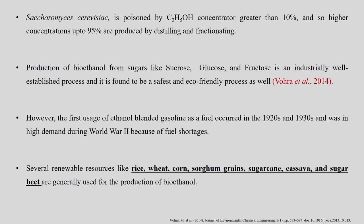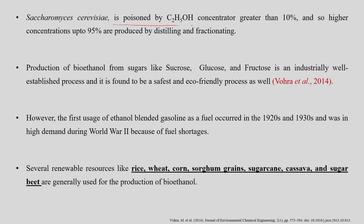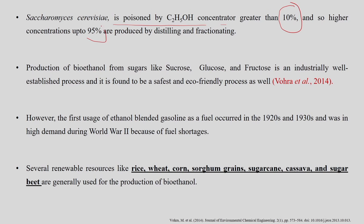Advancements are happening to convert material into ethanol more quickly, but our main focus in this course remains on the biochemical pathway. Saccharomyces cerevisiae, the widely used microbial strain, is poisoned by ethanol concentrations greater than around 10 percent. Higher concentrations of 95 percent are produced by distillation and fractionation.